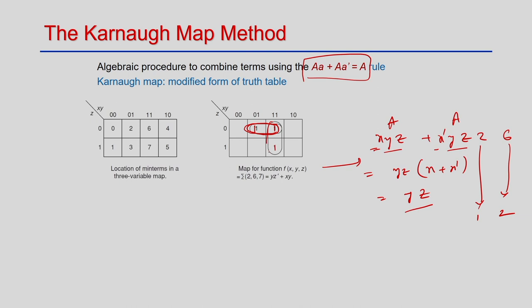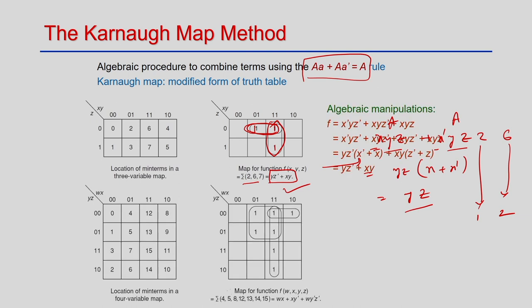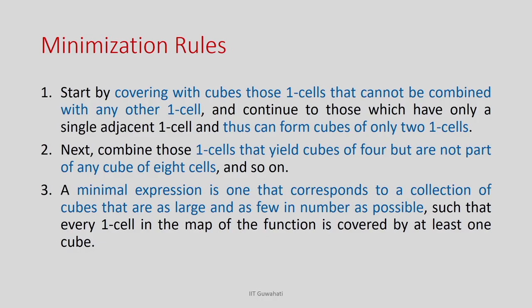For example, with 4 variables w, x, y, z, if the minterms present in the function are placed as 1s in the Karnaugh map, combining 4 consecutive minterms gives a product term with 2 variables — here, x and ȳ. Similarly, combining another group of 4 gives w·x, and combining another pair gives w·ȳ·z̄. With these 3 product terms covering all the 1s, the minimal expression has 3 product terms.